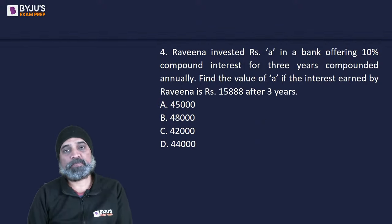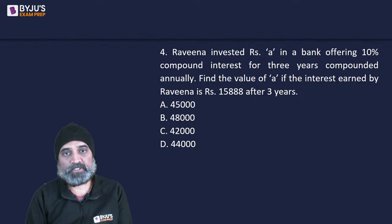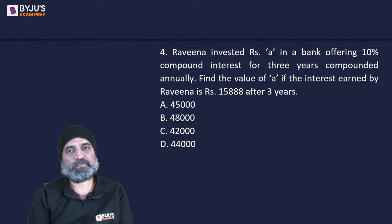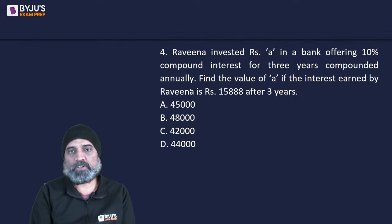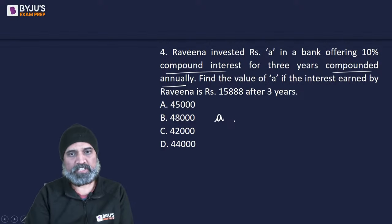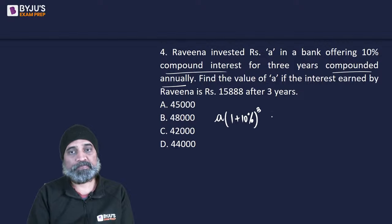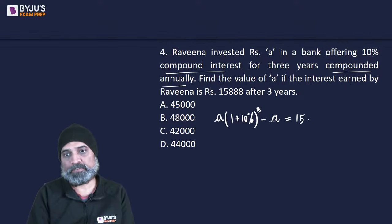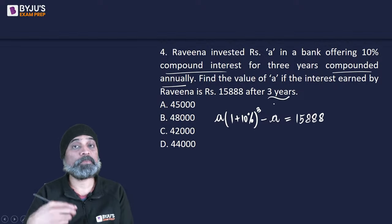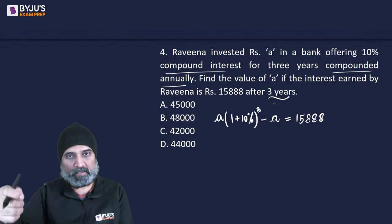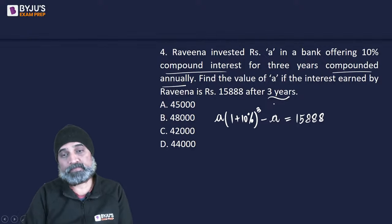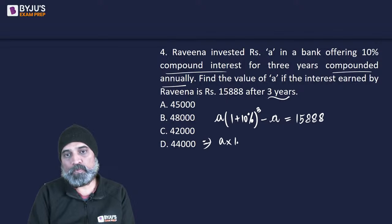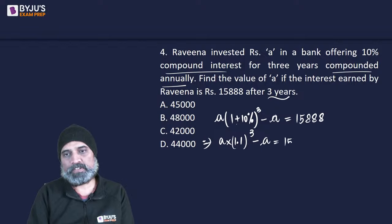Next question: Raveena invested rupees A in a bank offering 10% compound interest for 3 years compounded annually. Find A if the interest earned is rupees 15,888. Using compound interest: Amount = A × (1 + r)^n. Interest = A × (1.1)^3 − A = 15,888. Since 10% is 0.1, (1 + 0.1) = 1.1 cubed = 1.331. So: 1.331A − A = 15,888.